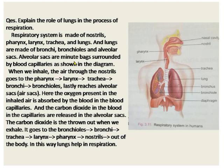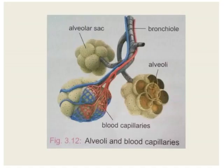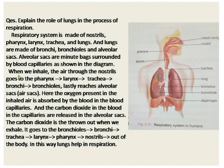Alveolar sacs are minute bags surrounded by blood capillaries, as shown in the diagram. When we inhale, air through the nostril goes to the pharynx, larynx, trachea, bronchi, then bronchioles, and lastly reaches the alveolar sacs. Here, the oxygen present in the inhaled air is absorbed by the blood in the blood capillaries, and the carbon dioxide in the blood in the capillaries is released into the alveolar sacs.